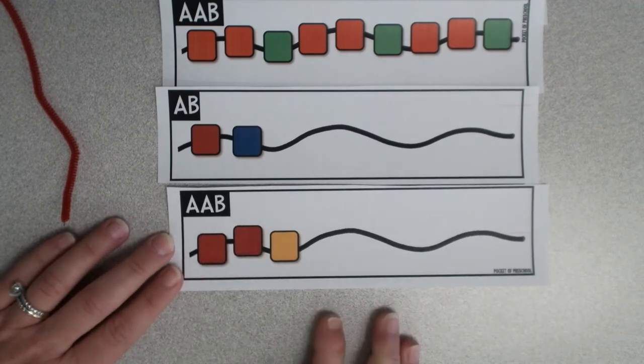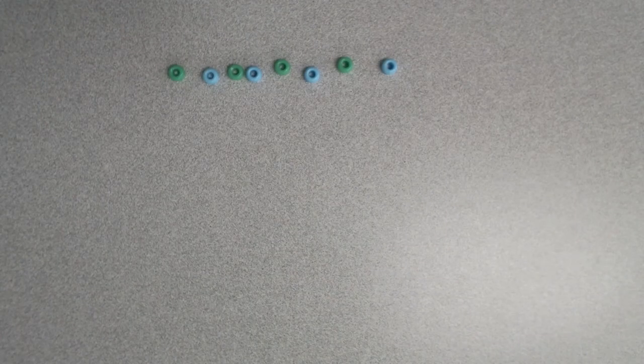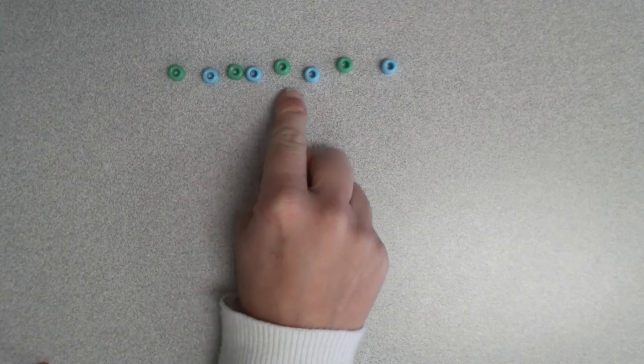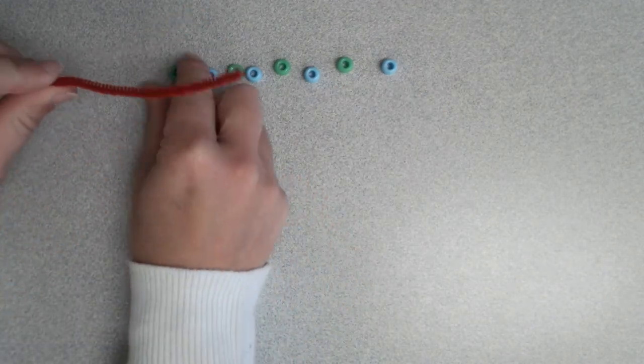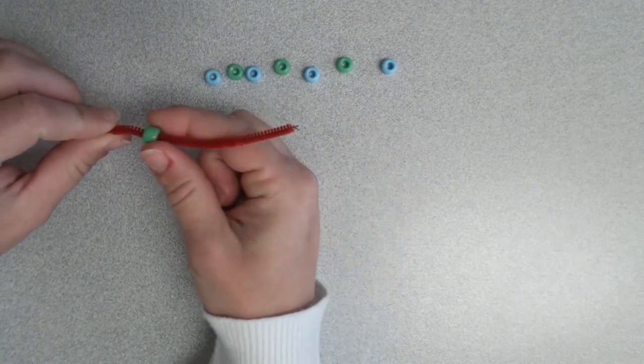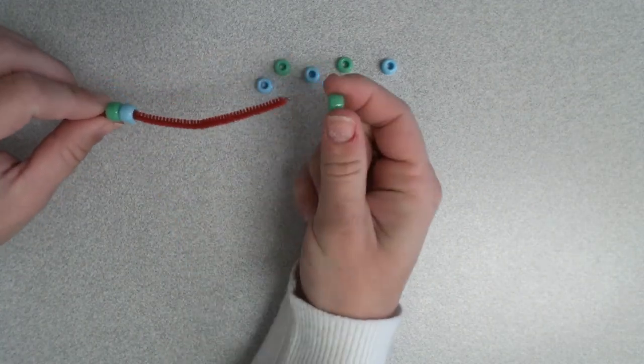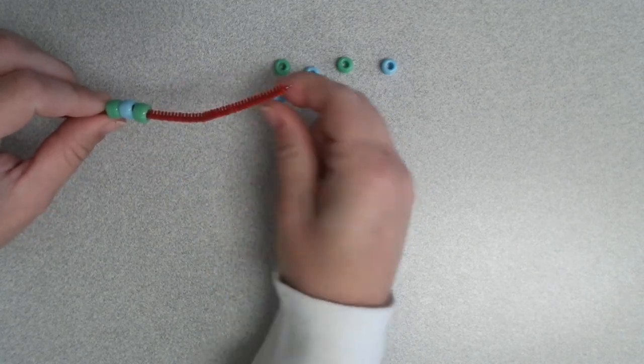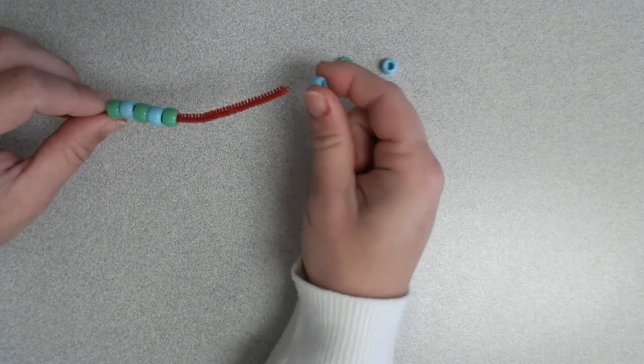Now you can do these patterns a few different ways. You can have the children build their pattern right here on the table or you can have them include the pipe cleaner. By threading the beads onto the pipe cleaner, not only are you saving the beads from rolling away on the floor, but now you're adding the fine motor component.